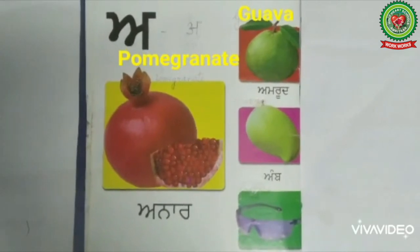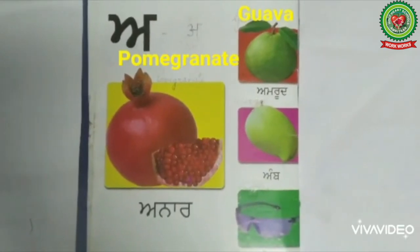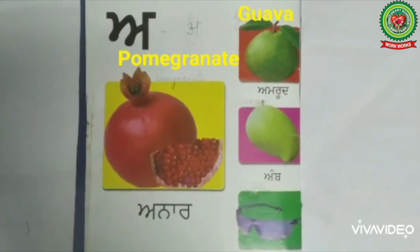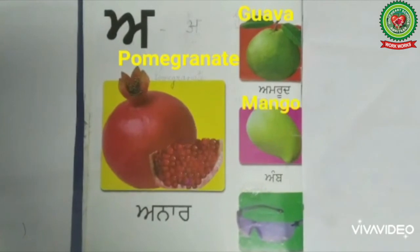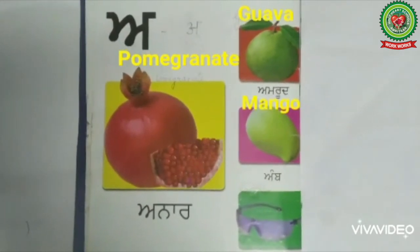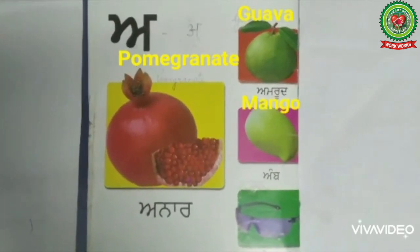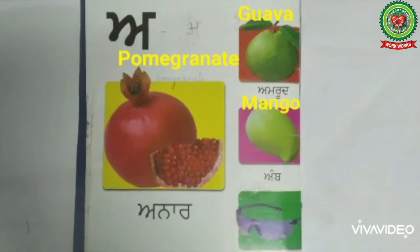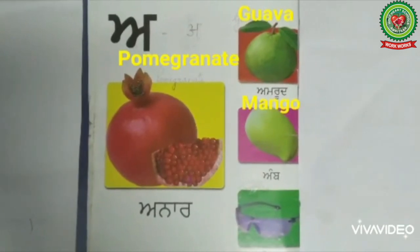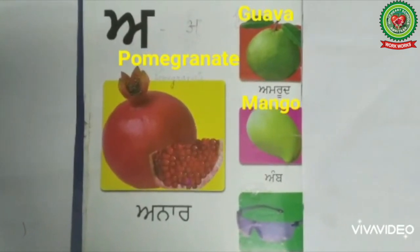Now look at the next picture and start reading: Ada, A — Aimb. Amba means mango. M-A-N-G-O. Read it once again: Ada, A — Aimb. Amba means mango.